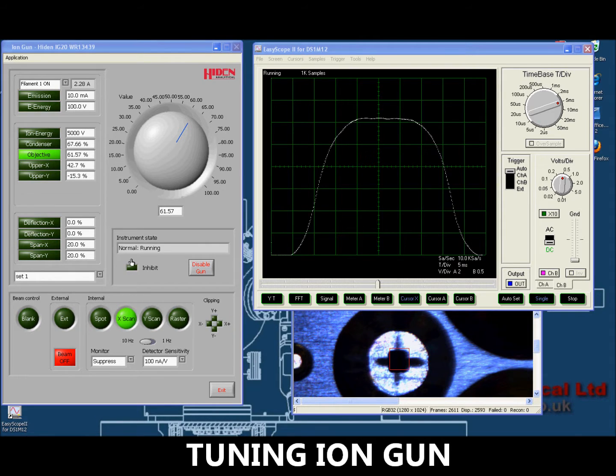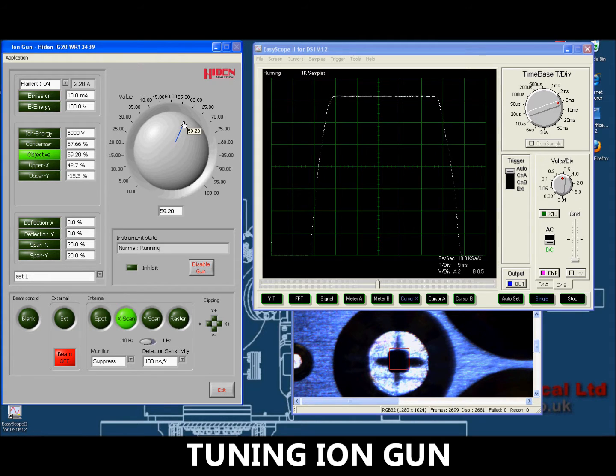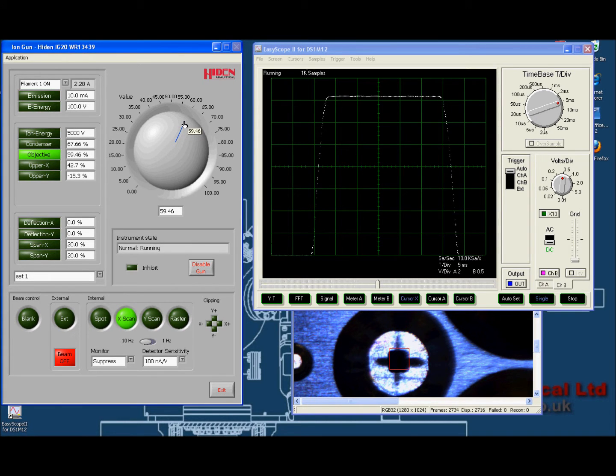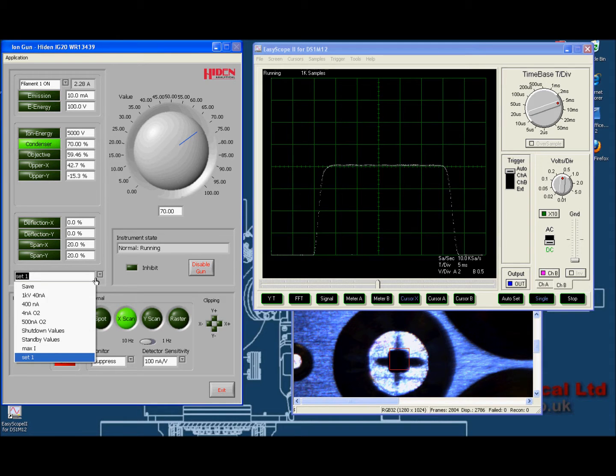Both primary ion guns are controlled by an intuitive computer interface permitting the ion beam shape and current to be observed during tuning. Parameters can be stored and recalled for fast resetting of the tool.